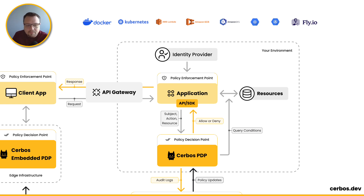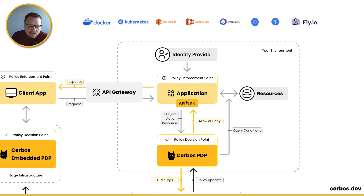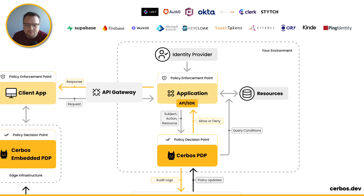That request comes in and hits one of your applications. Your application is a policy enforcement point — the system that will actually enforce the allow or deny decisions to your end users. As a request comes in, it's most likely authenticated. Your identity provider, your IDP, would have issued some sort of token or cookie to help your application identify who that user is. That token can contain the user's groups, roles, teams, attributes, and so on.